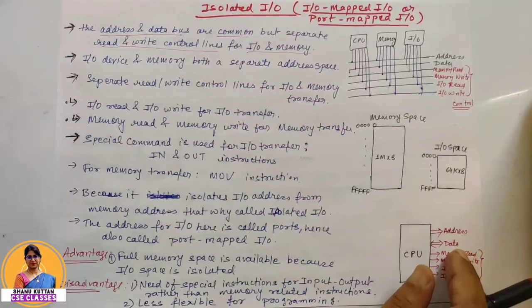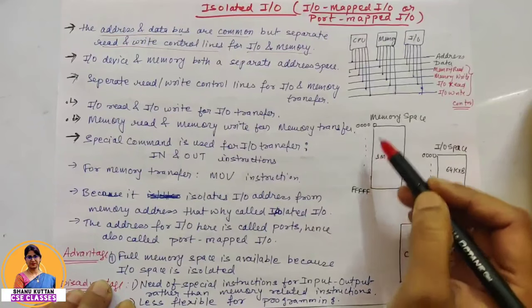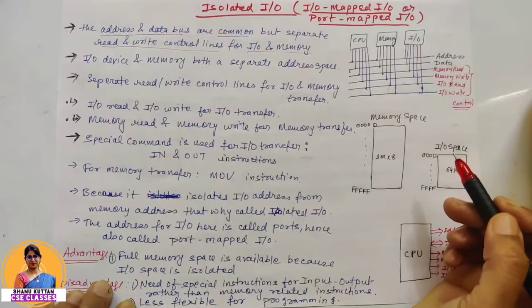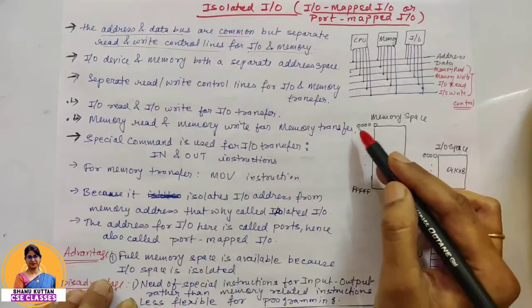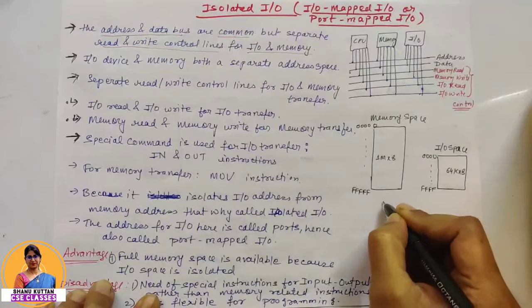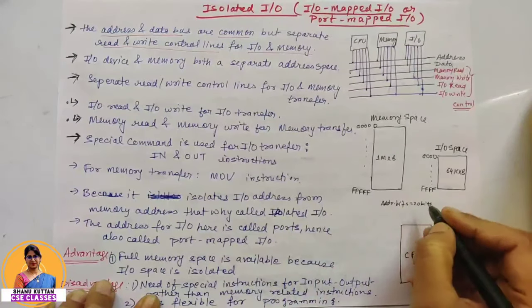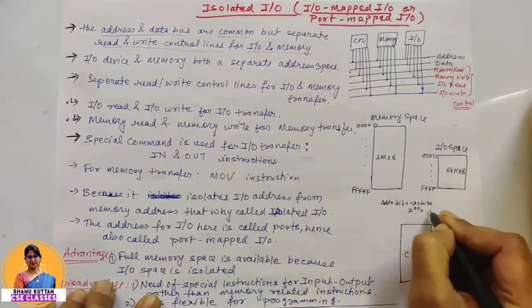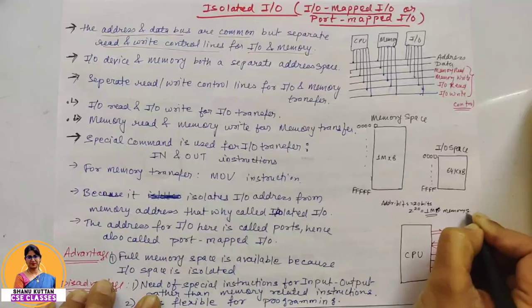To understand this another way: what is address space? Address space means the set of all possible addresses that can be generated by the CPU. It depends on the number of address lines in the CPU. For example, if a CPU has a 20-bit address, meaning 20 address lines, then the memory size will be 2 to the power 20, which is 1 MB. So 1 MB will be the memory size.